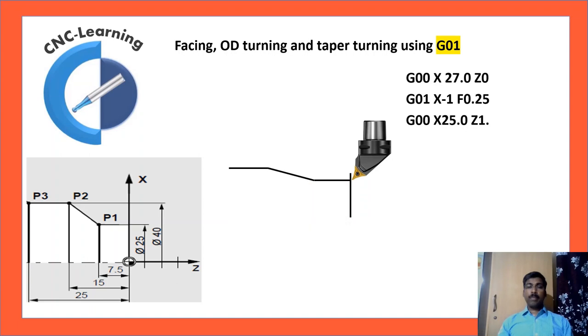Next is rapid positioning to Z minus 1. X25 is the diameter to be machined. So 1 mm safe in Z is positioned. And G01, Z minus 7.5. For OD turning, a straight turning is done with only Z-axis command.